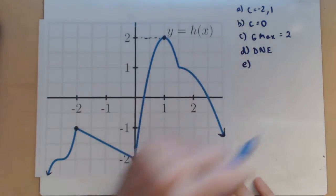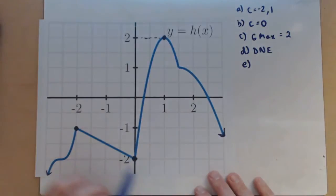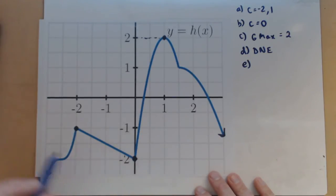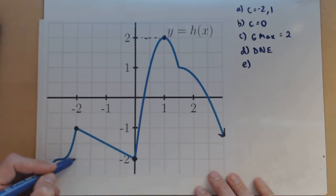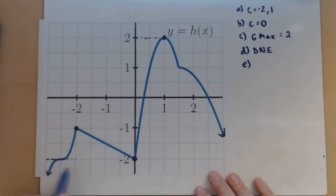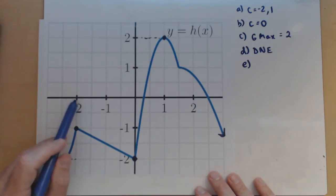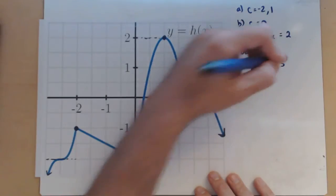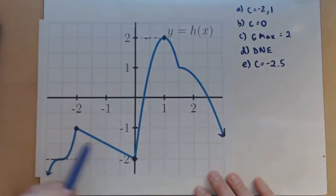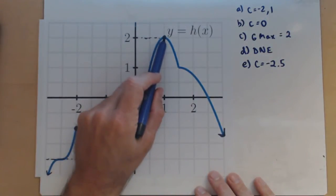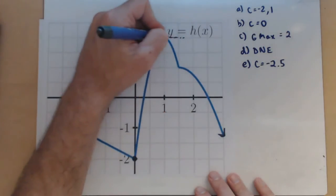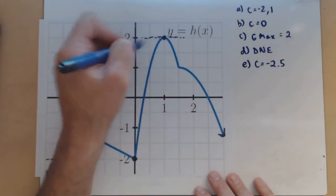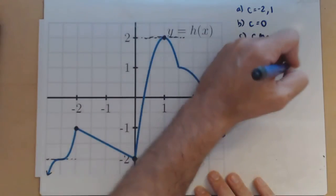E: identify all values for c for which h prime equals 0. So this is looking for a horizontal tangent, and there's only a couple of them. We're going to have a horizontal tangent right here — it flattens out and you can see the horizontal tangent line — so that's going to be at negative 2.5. We're also going to have one here at our local max; we can see the horizontal tangent at the turning point, so that's at c equals 1.